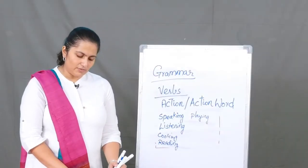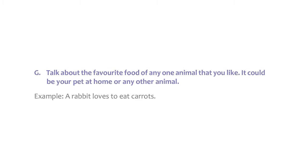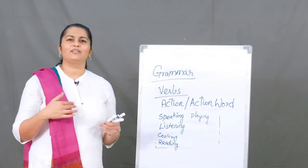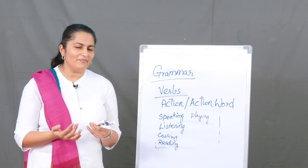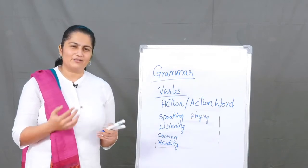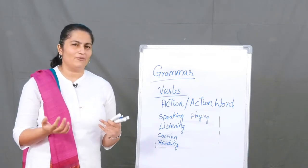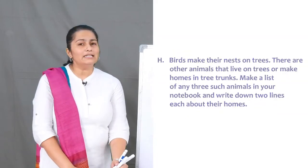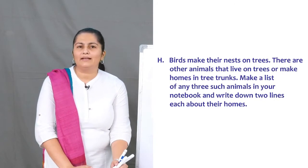Moving on to speaking: talk about the favourite food of any one animal that you like — it could be your pet, like a cat, a dog, a fish, or any other animal. Write down the points and then speak about it to your family or group of friends. That helps you communicate your ideas.